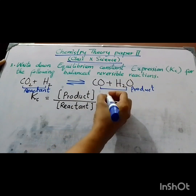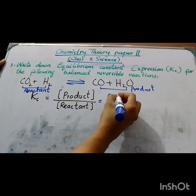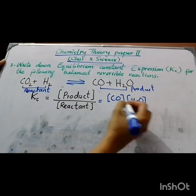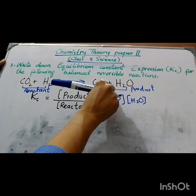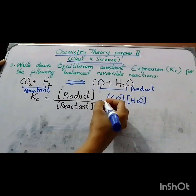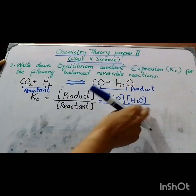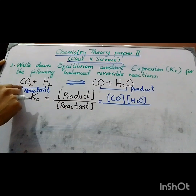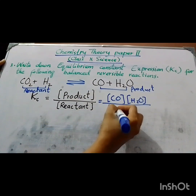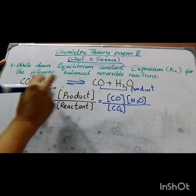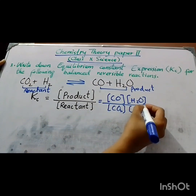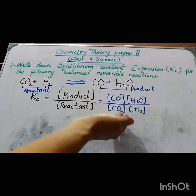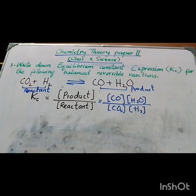We will now solve the third equation. The products are carbon monoxide (CO) and water (H₂O) — we show both products in separate brackets. Divided by the reactants: carbon dioxide (CO₂) and hydrogen (H₂). You have to write the formula first and then put the values into it in your paper.